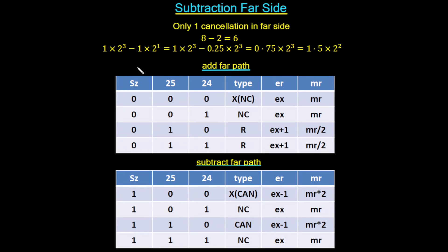The near path only deals with cancellations, but there is one possibility of a cancellation in the far path. The far path handles exponent differences greater than or equal to 2. In our example the exponent difference is 3 minus 1 equals 2, so it's a far path calculation — but it still involves a cancellation. Whenever the exponent difference is exactly 2, we can potentially have a cancellation that must be handled in the far path.